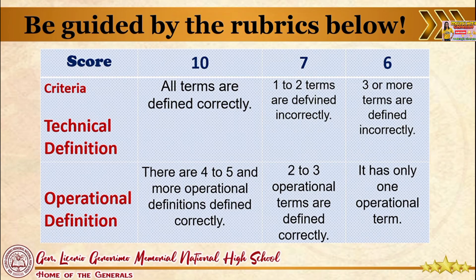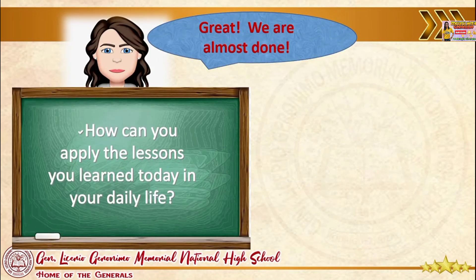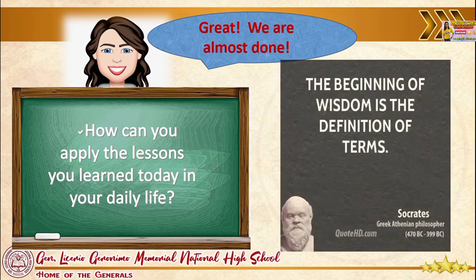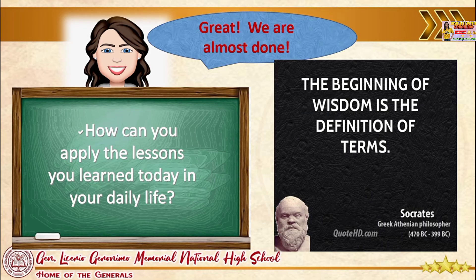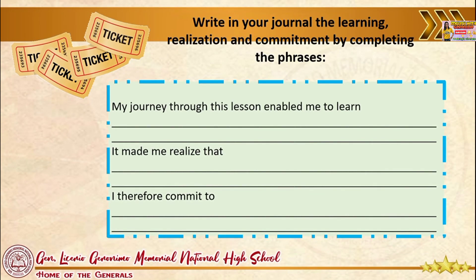Let us be guided by the rubrics below. Great! We are almost done! How can you apply the lessons you learned today in your daily life? According to Greek Athenian philosopher Socrates, 'the beginning of wisdom is the definition of terms.' As your exit pass today, write in your journal your learning, realization, and commitment by completing the phrases: 'My journey through this lesson enabled me to learn…', 'It made me realize that…', and 'I therefore commit to…'